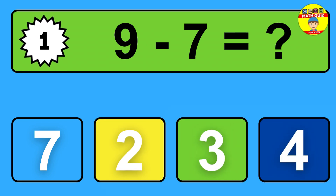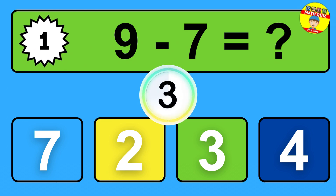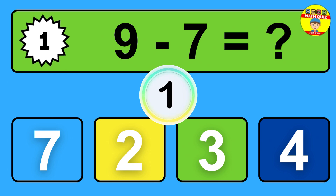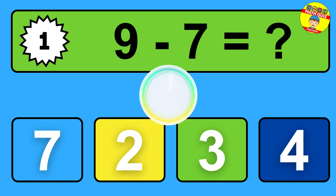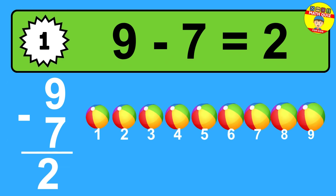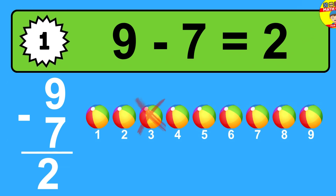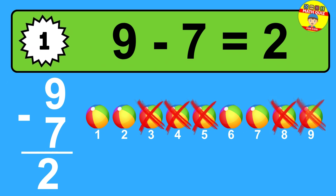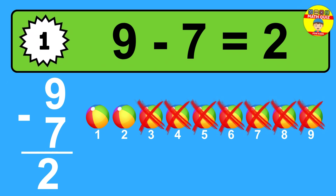Question one: nine minus seven equals what? The answer is nine minus seven is two. Let's count it: one, two.